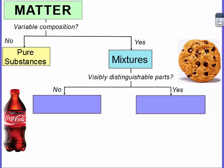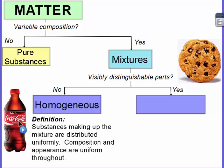So if it's a mixture, can we visibly distinguish the parts? If not, then it's homogeneous. It's a substance making up the mixture that are distributed uniformly. So it's spread evenly throughout. The composition and appearance are uniform throughout. But the particles are not bonded together. So soda or Coke is made up of sugar, water, carbon dioxide, flavoring, but those things are not bonded together. They're just all mixed together. So that would be homogeneous.